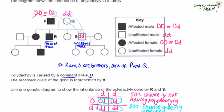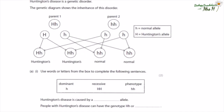You might come across other genetic diseases. Here's another example — Huntington's disease, a genetic disorder. The genetic diagram shows the inheritance of the disorder. Complete the following sentences: Huntington's disease is caused by a dominant allele, as the capital H is used for the Huntington's allele. To not have Huntington's you need two recessive alleles. Whenever there is at least one H allele the individual has Huntington's, confirming it is dominant. People with Huntington's disease can have the genotype Hh or HH.